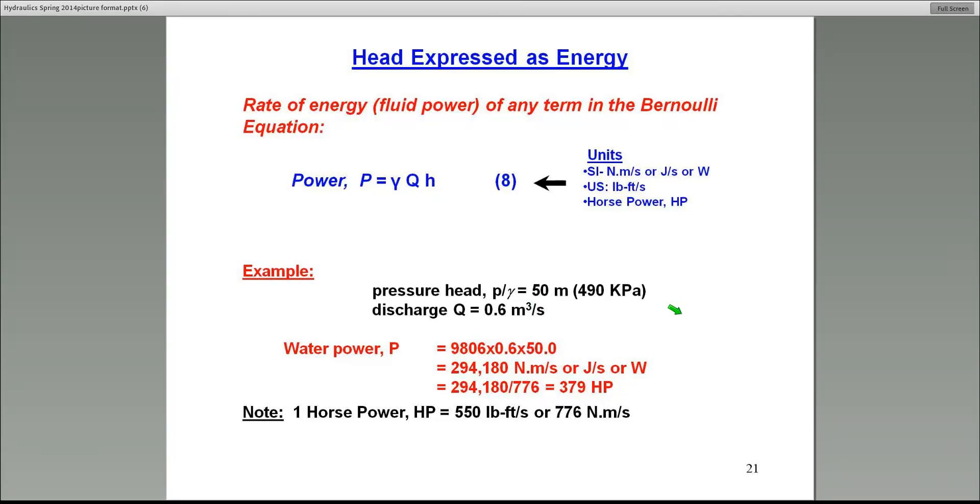Now, all these head units or head terms in the Bernoulli equation, I told you represent energy. Energy or power. And to really show that or to convert them into actual energy units, you have to use this equation. So try to memorize this or take it with you. Very often, we always like to find out what that head means in the Bernoulli equation. Remember, we call it the energy equation. So this head, H, can be converted into work done or power by multiplying by Q, the flow rate, and the specific weight of the fluid, gamma.